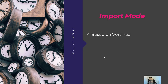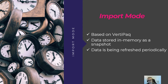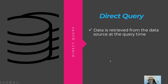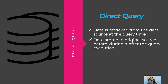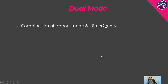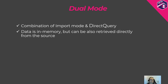Import mode is the most common way to store data when working with Power BI. It is based on VertiPaq, and table data is stored in memory as a snapshot that can be refreshed periodically — the frequency depending on your business needs. When using DirectQuery mode, data is retrieved from the data source at query time — it resides in its original source before, during, and after query execution. Dual mode is a combination of the two: data is loaded into memory, but at query time it can also be retrieved directly from the source.